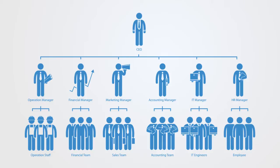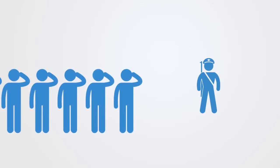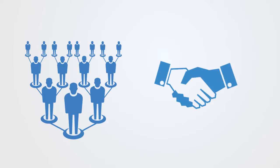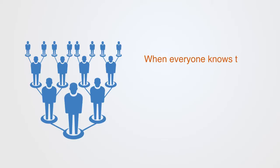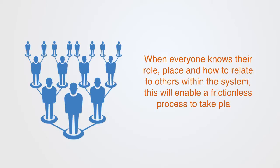In large social systems we have organizational charts that define how the different positions relate to each other, and within very formal situations they may define specific protocols for interaction such as a soldier having to salute before interacting with a member of a higher rank or having to call the Queen her majesty. But the primary objective here is to automate the interaction between the agents so that it does not have to be renegotiated each time. When everyone knows their role, place and how to relate to others within the system, this will enable a frictionless process to take place.